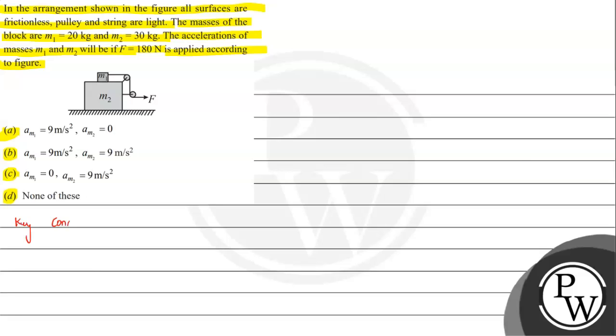And in this constraint motion we will be mainly dealing with string constraint. So let's consider a normal case. In this we will understand what we are exactly talking about. So here let's suppose we have a block.